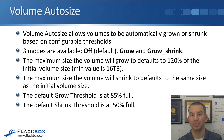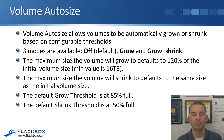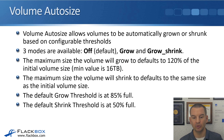Three modes are available, which are all pretty self-explanatory by their name. There's off, which is the default. There's also grow and grow shrink. If you use grow, the volume will grow if it's running out of space. If you use grow shrink, the volume can both grow when running out of space and shrink if it's not using much space. The maximum size the volume will grow to defaults to 120% of the initial volume size. The default grow threshold is at 95% full, and the default shrink threshold is at 50% full — meaning if it drops below 50% full, the volume will shrink.